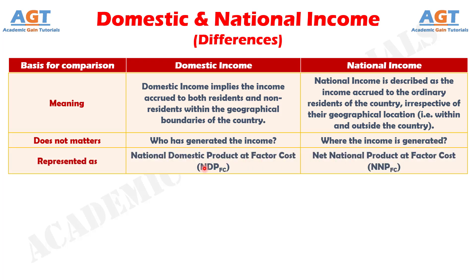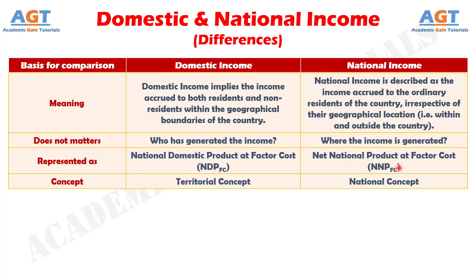Number three: NDPFC, that is, the Net Domestic Product at Factor Cost, represents domestic income. Conversely, NNPFC, which is the Net National Product at Factor Cost, denotes national income. Number four: domestic income is a territorial concept because it is based on the income generated within the geographical territory, whereas national income is a national concept because it is based on the residential status of the producers around the world.